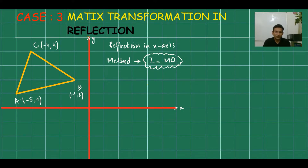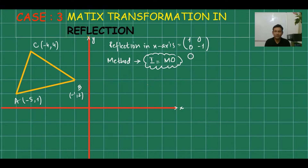First of all, what is the matrix for the x-axis? The x-axis matrix is [1, 0; 0, −1], and it's fixed — we cannot change it. But how do we get this? I have a method and I will explain it at the end of this video — that's how we can find all four matrices of reflection.